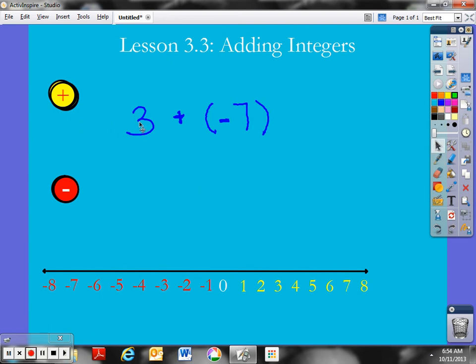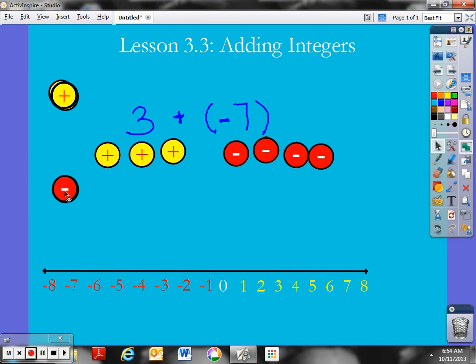So if I want to take a look at a problem, and let's say I start with something like 3 plus, and when you're adding integers and you have a positive and negative, you'll probably see the negative in parentheses. It's just to show you separation between this addition sign and the negative sign. So let's go 3 plus negative 7.